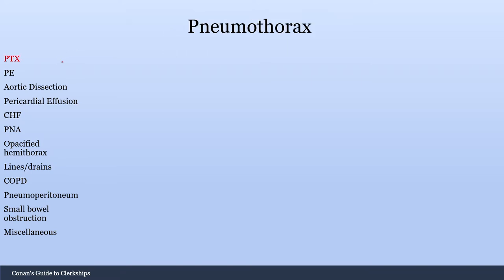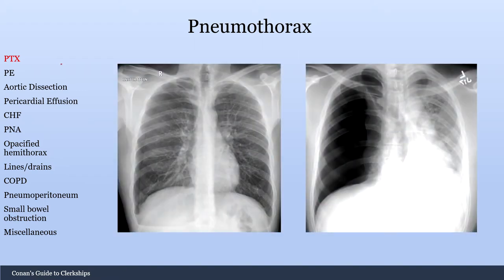Let's talk about pneumothorax. Here are two pictures of pneumothorax — the one on the left is a normal pneumothorax, and the one on the right is a tension pneumothorax. If you look closely, you can see this white line going across — this is called a white visceral pleural line, and is one of the signs you can see in a pneumothorax.